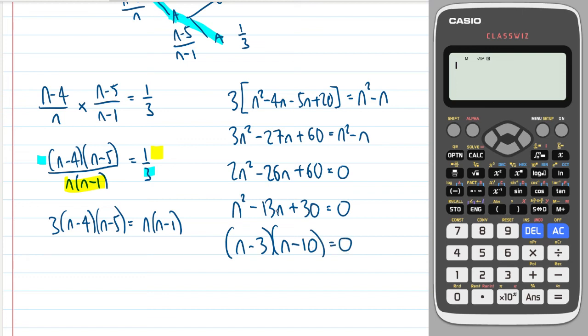Yeah, they both add to make minus 13 and they times together to make positive 30. So I get n equals three and I get n equals 10.